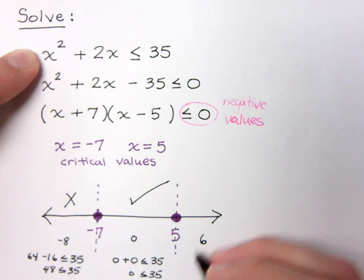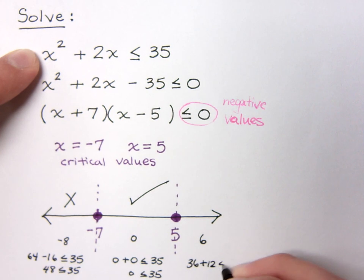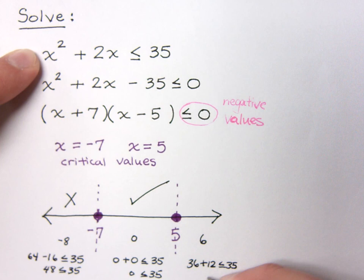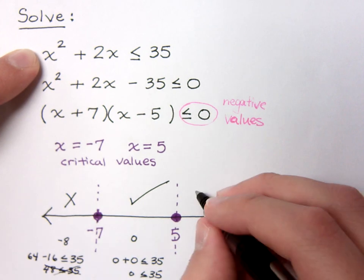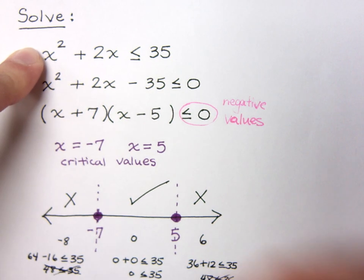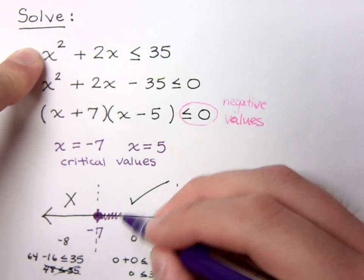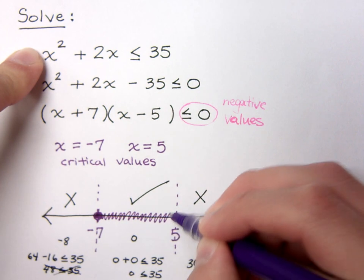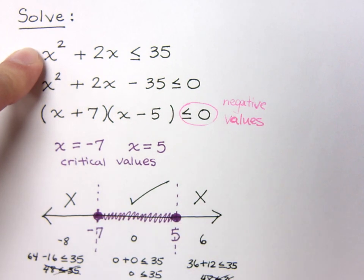Now, when I pick 6, that's going to give me 36 plus 12. And I want to see if that's less than or equal to 35. And, clearly, this is not less than or equal to 35. So, that doesn't work, just like this guy didn't work. So, this interval over here is not part of the solution set. So, what we're saying is that if we pick anything between negative 7 and positive 5, that will be our solution set.